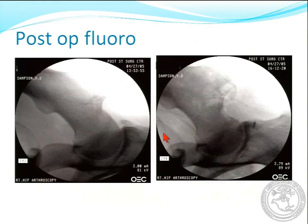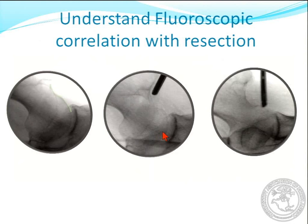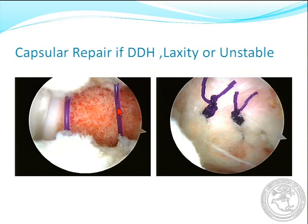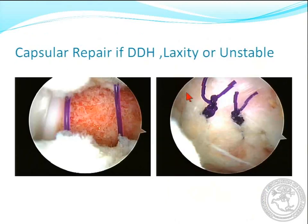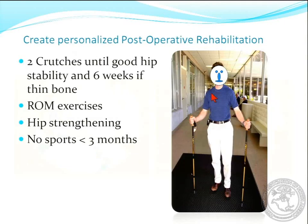Make sure you check everything with postoperative fluoro and understand what you're looking at. This sequence in the lateral decubitus position: we're looking at the head and neck area, this is the anterior rim we have to take off, the head and neck has been resected, now we take off the anterior rim, and finally that has been taken off. If there's laxity, or if you want to restore the zona orbicularis for reasons of fluid flow through the hip, repair your capsule — it's not hard. If you're a shoulder arthroscopist, this is not a hard procedure. Then personalize your postoperative rehabilitation, whether with a therapist or without.